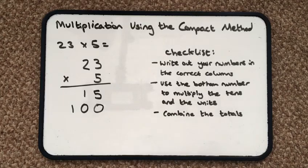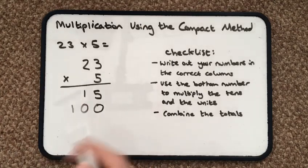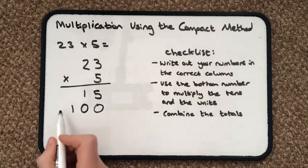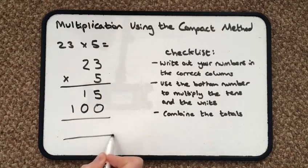Then it says combine the totals. Now because multiplication is just repeated addition, I'm actually going to have to add all of these up together. And this is where my real equals sign comes in.